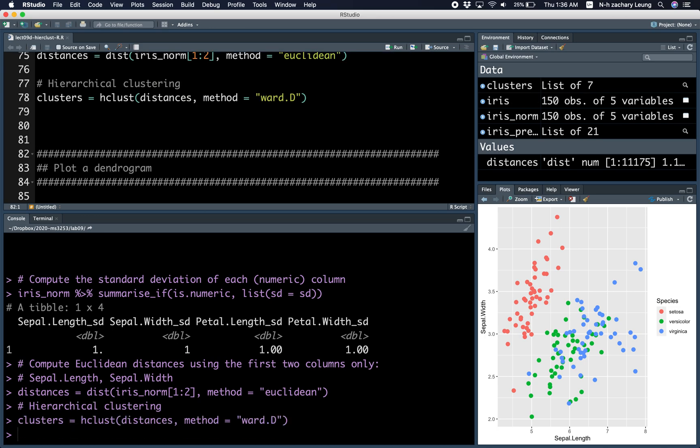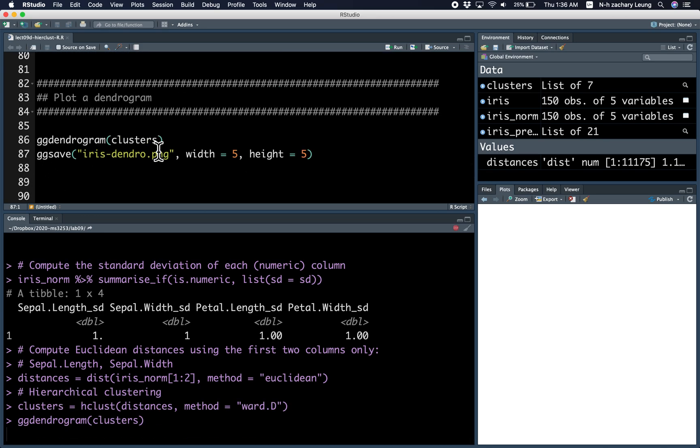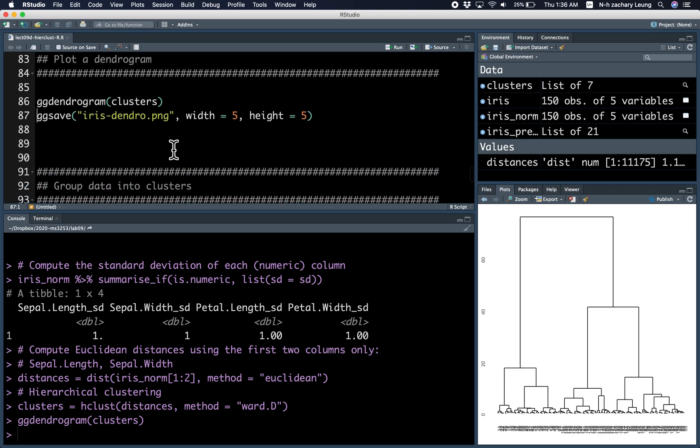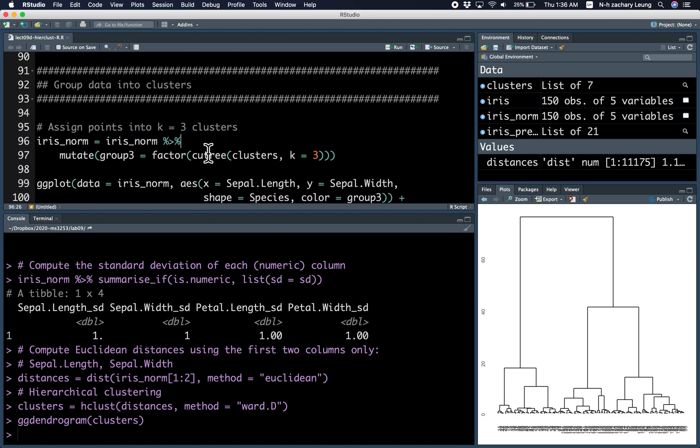You can plot a dendrogram using the ggdendrogram function, and this is how you save it. So let's group the points into three clusters. You have to use the cutree function to do that, and to specify how many clusters you want.